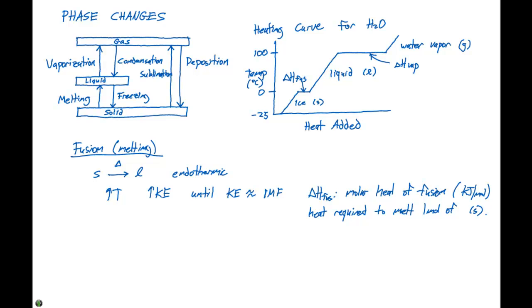We refer to this as the delta H of fusion in terms of the energy here. So this is referred to as the molar heat of fusion. It's typically represented in kilojoules per mole, and it's the heat required to melt one mole of a solid. So we use this delta H of fusion. Remember that when we talk about these energy quantities, that they're going to depend on the amount.